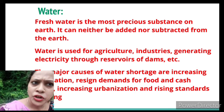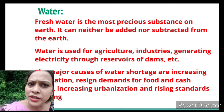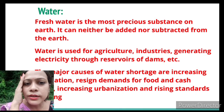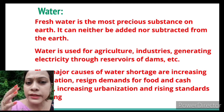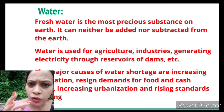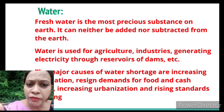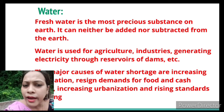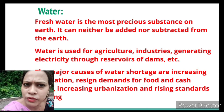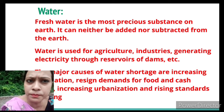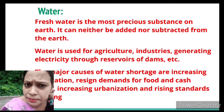Fresh water can neither be added nor subtracted from the earth. Because of the water cycle — when water falls over the surface it evaporates, then condenses and comes back as rain, snowfall, or another form — the amount of water available to us is essentially fixed. We cannot add new fresh water, nor can we subtract it.